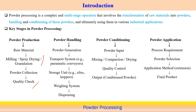For powder handling, first there is powder generation, then we look into the transport system — using conveyors to transport powder from one point to another. Then we look into storage units such as sliders and hoppers. For precise utilization we can also perform weighing, and finally dispensing the powder at the desired position.